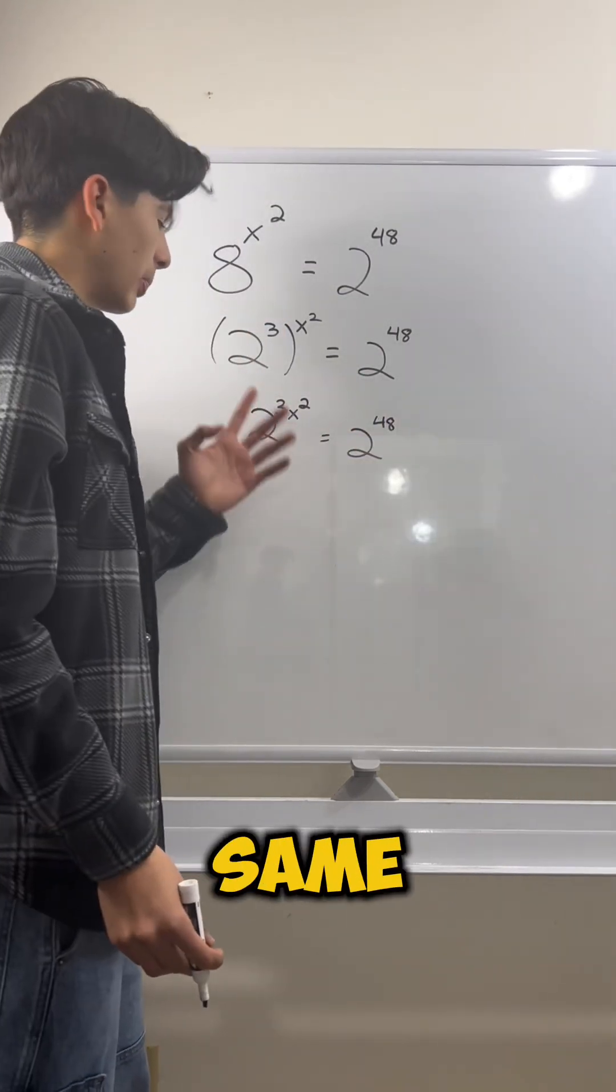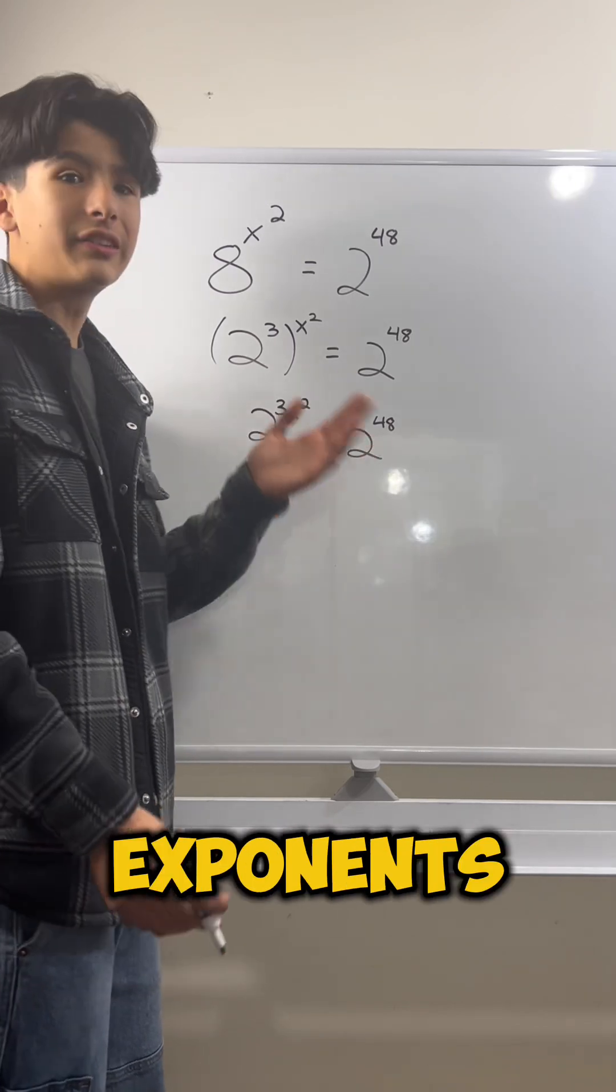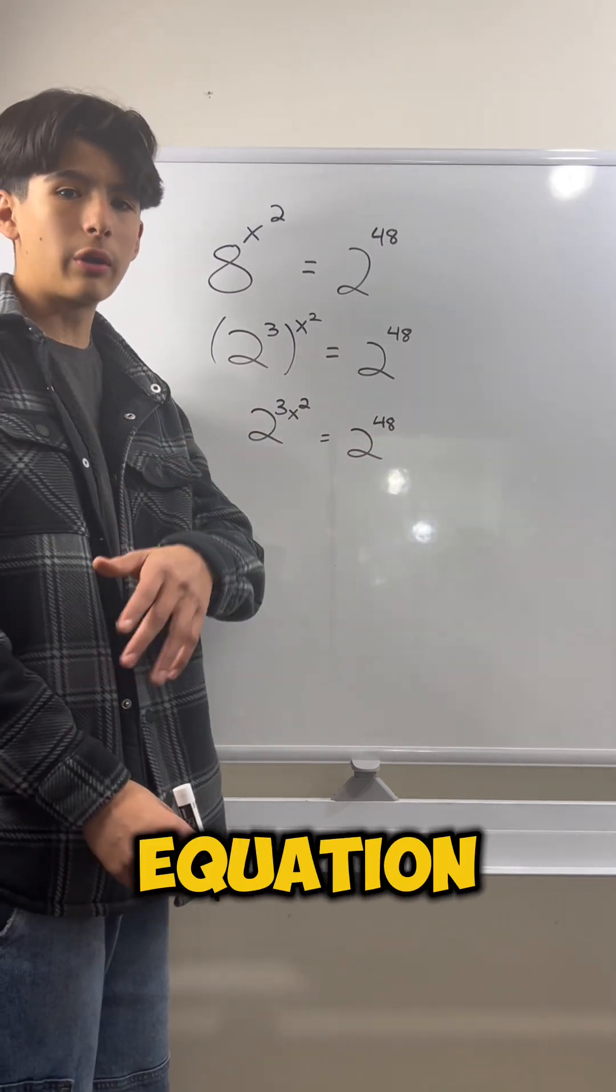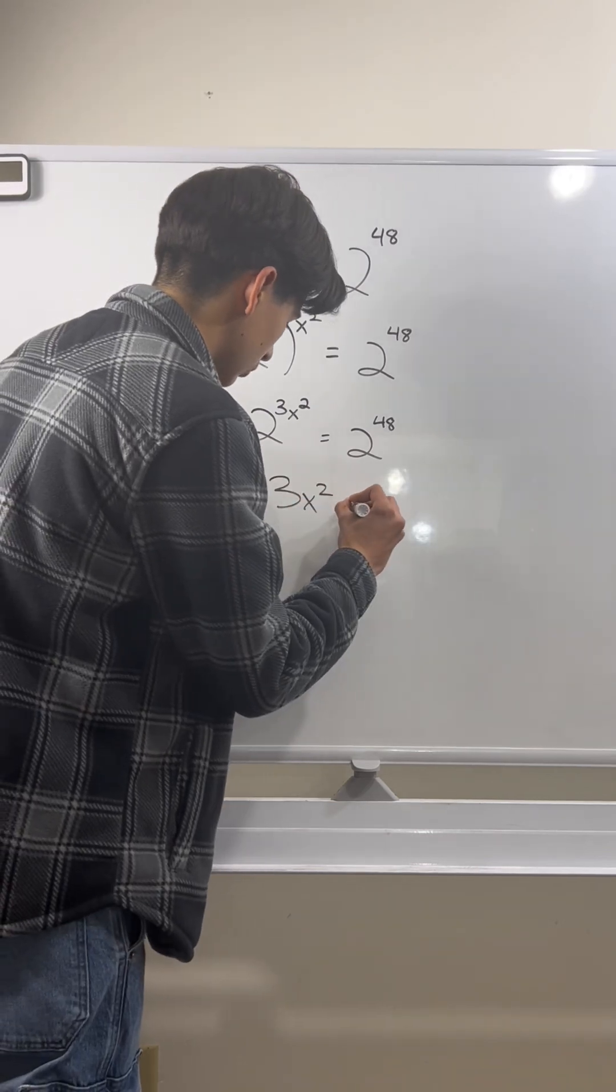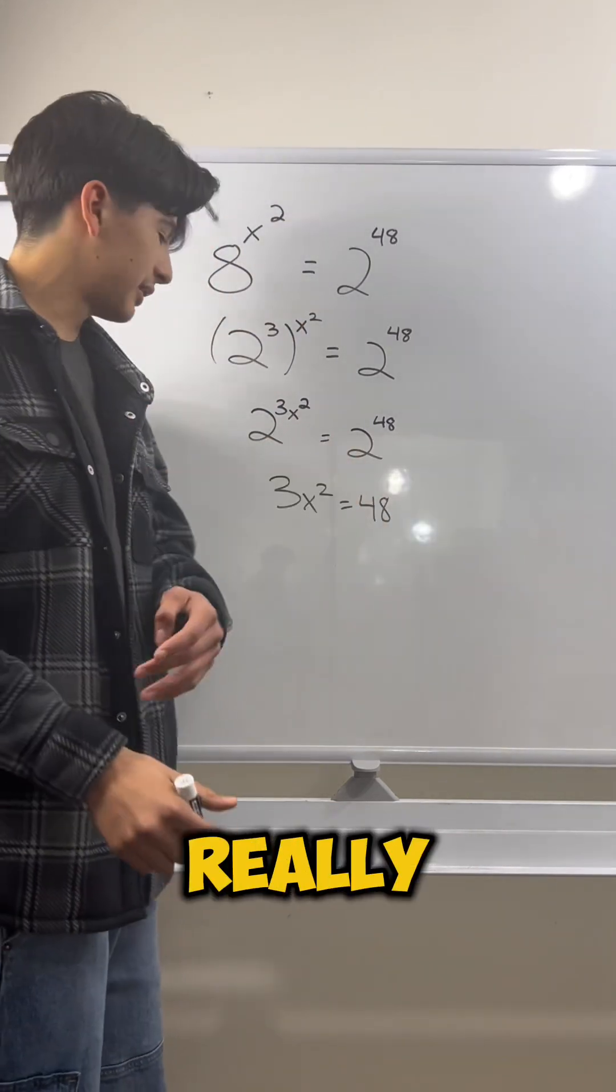Now that the bases are the same, they're both 2, we could just set the exponents equal to each other. So then the new equation will look like this, which is really simple to solve.